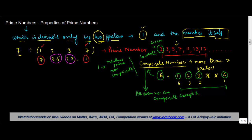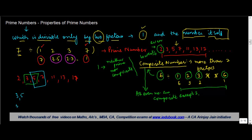Now if you notice, looking at the list of prime numbers — two, three, five, seven, eleven, thirteen — consider the pairs three and five, or five and seven. What is common between these two sets of numbers? Both numbers in each pair are prime, and they are consecutive odd numbers. These kinds of numbers are known as twin primes, which means two consecutive odd numbers that are both prime.